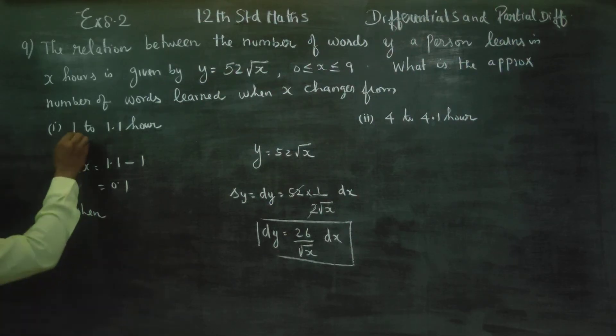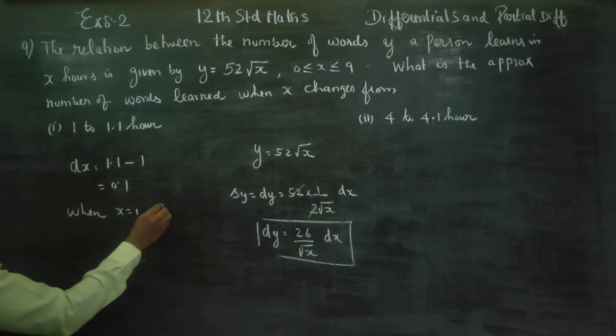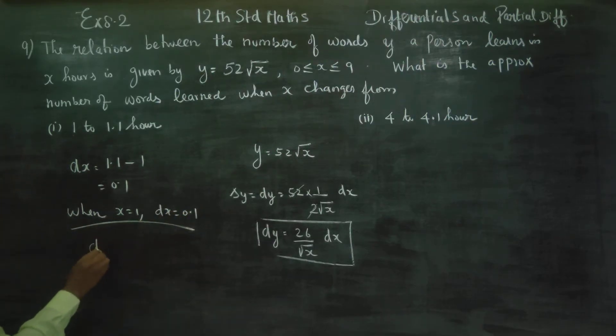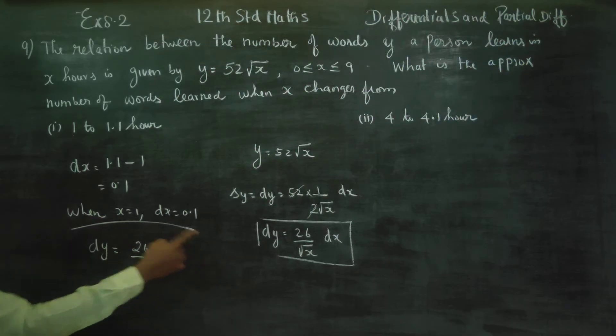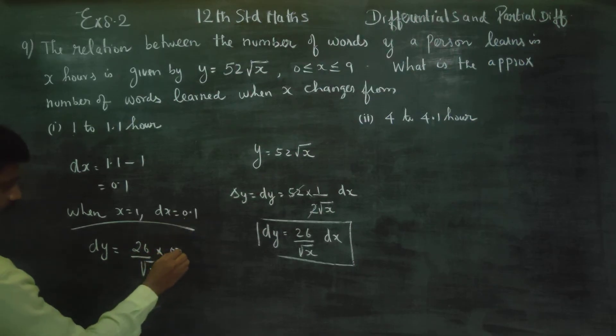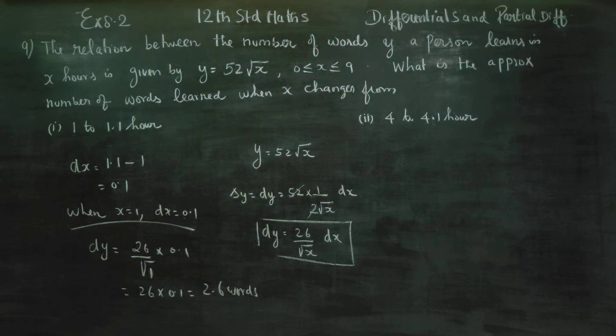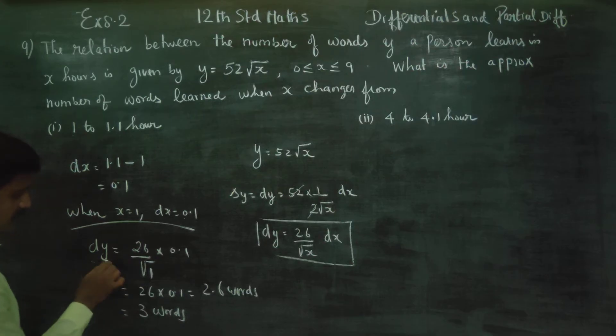You have to find the value of dy. dy is equal to 26 by root of x, root of 1, into dx. dx means 0.1. Root of 1 is 1. Then, 26 into 0.1, which gives 2.6 words. This is approximate 3 words. Because dy is words.